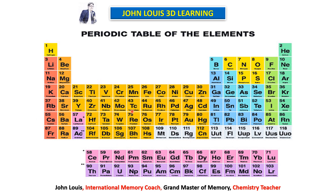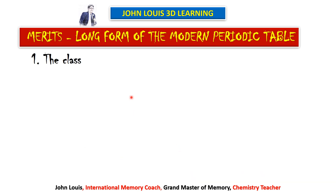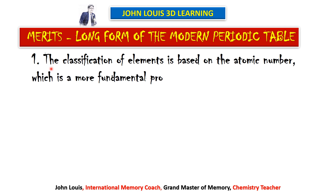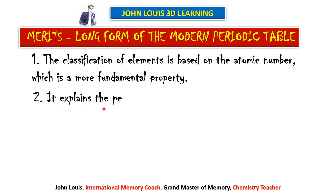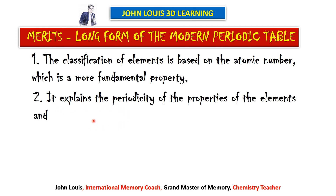The salient features will be studied in the next video. Now let's see the merits and demerits of this modern periodic table very quickly. There are six merits and two demerits to learn. The first merit: the classification of elements is based on atomic number, which is a more fundamental property, as found by Henry Moseley.